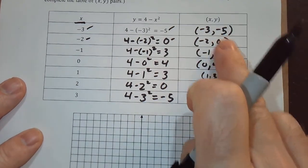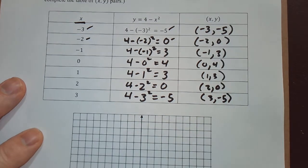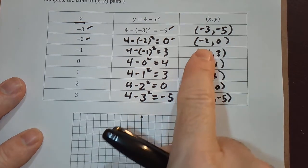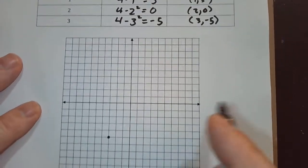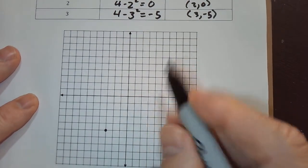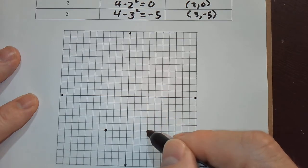Actually, I did the top one. Let's do the bottom one. I did negative 3, negative 5. Now I have to go 3, negative 5. 1, 2, 3, negative 5. 2, 3, 4, 5.